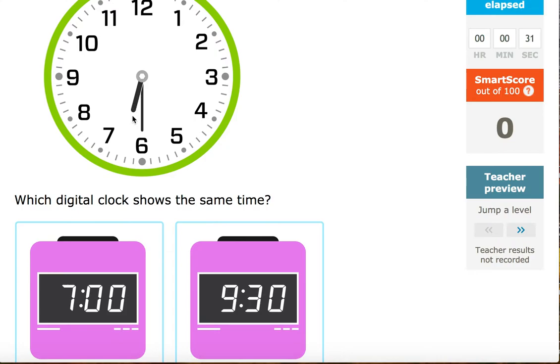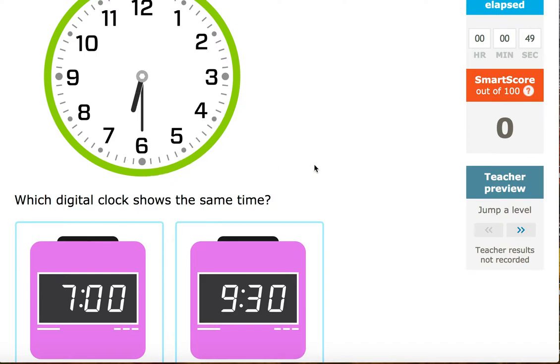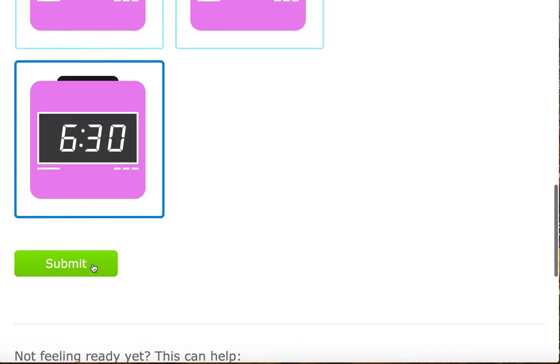I notice that the shorthand is pointing within the realm of six. So the hour is six o'clock. If I had a pen boys and girls, I will note it down here. So it will be six o'clock and the minute hand is pointing directly at 5, 10, 15, 20, 25, 30. So 6:30. Find my answer. Click it and you click submit.